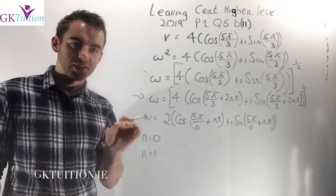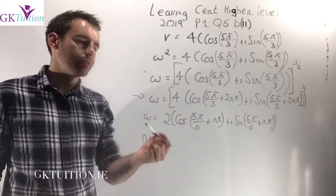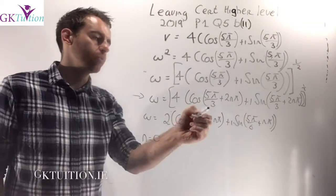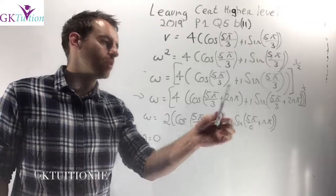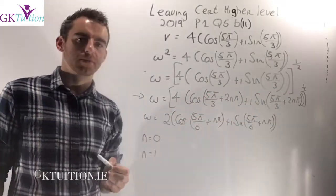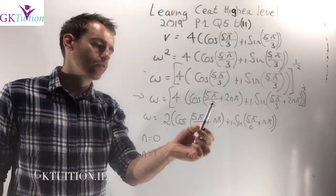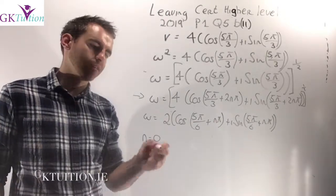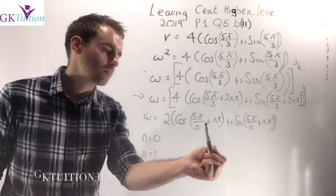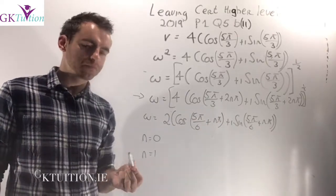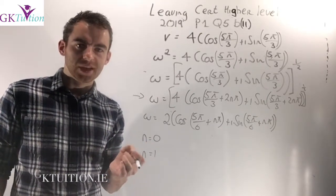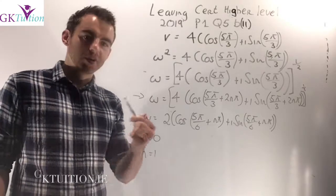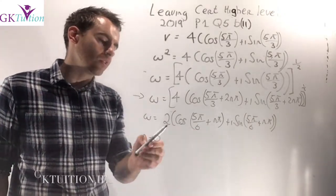Applying De Moivre's theorem: the modulus 4 raised to the power ½ gives 2. For the angle, multiply by ½: (5π/3 + 2nπ) × ½ = 5π/6 + nπ. So W = 2(cos(5π/6 + nπ) + i sin(5π/6 + nπ)). The question asks for answers in the form a + bi (rectangular form), so I substitute n = 0 and n = 1 to get the two values.